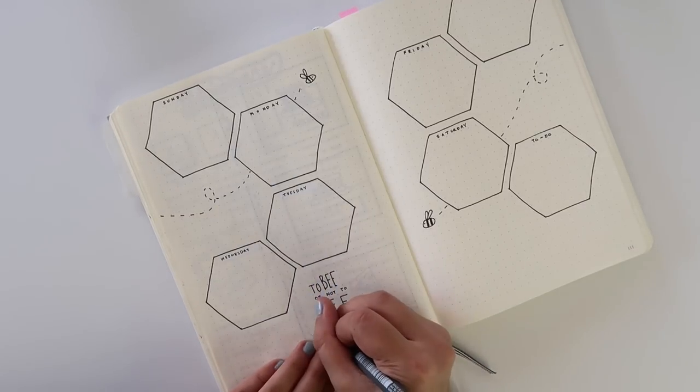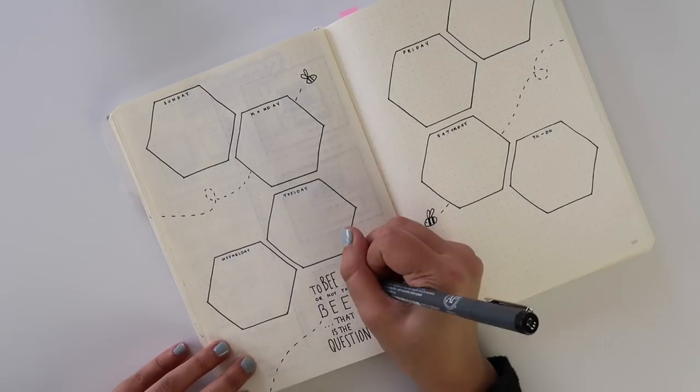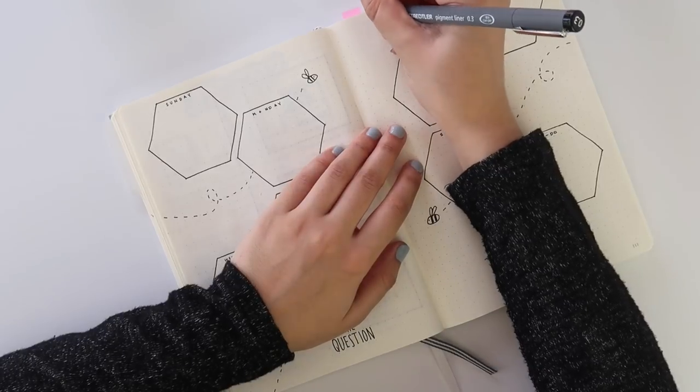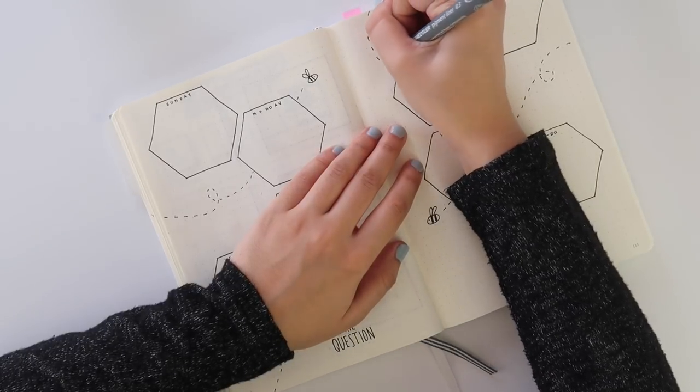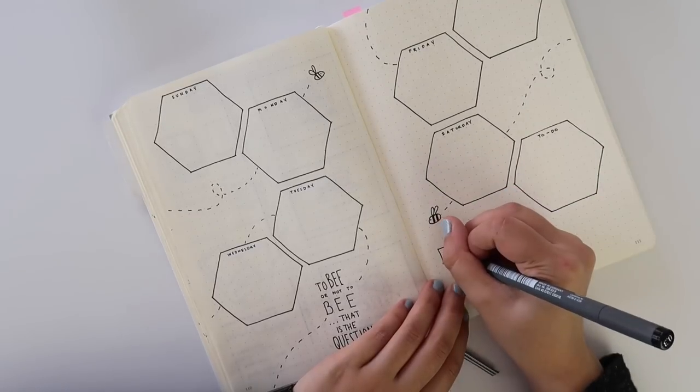And then at the bottom I also added a quote that is a play on the word be: to be or not to be, that is the question. So clever, I know. I added some more bees and I wrote down what week of May this would be.